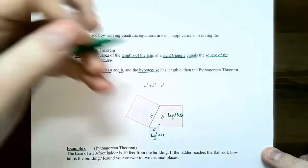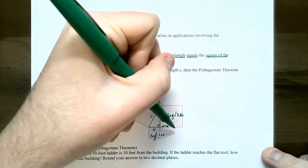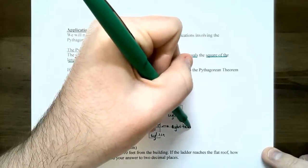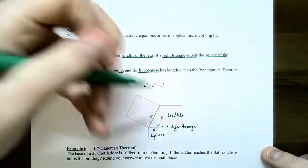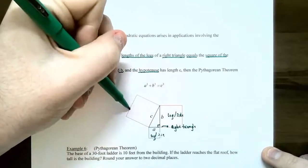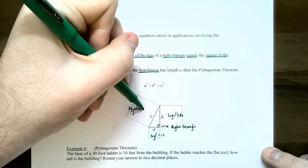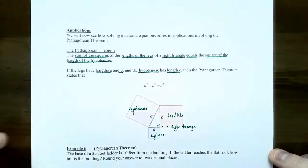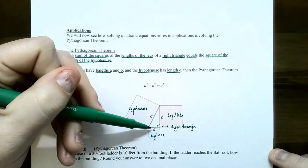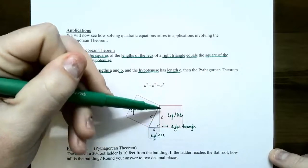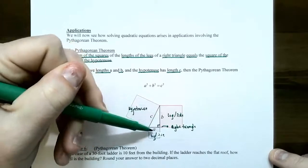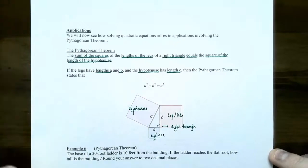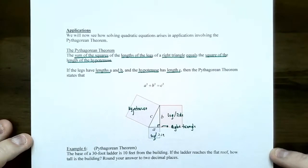A right angle is a 90-degree angle or a corner in a right triangle. You'll see a little tiny square that indicates it's a right angle. The side that's opposite the right angle is always called the hypotenuse, and it has length C. So the Pythagorean Theorem says A squared plus B squared equals C squared.